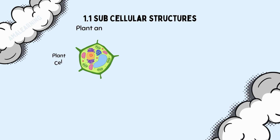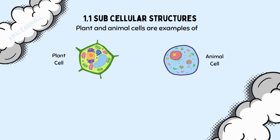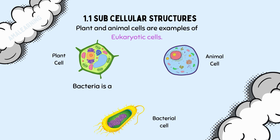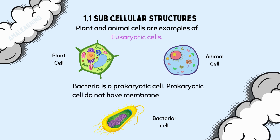Plant and animal cells are examples of eukaryotic cells. This means that their genetic information, DNA, is stored within a membrane-bound nucleus. Bacteria is a prokaryotic cell. This means its genetic information is not stored in a membrane-bound nucleus. Prokaryotic cells do not have membrane-bound organelles.